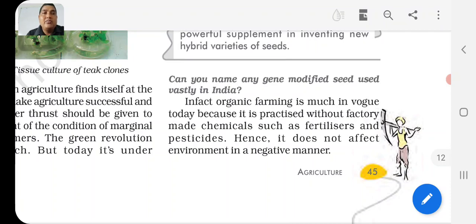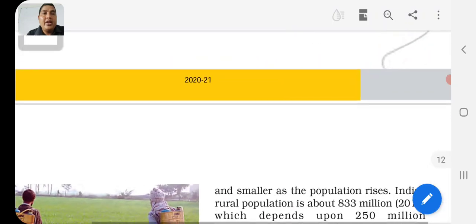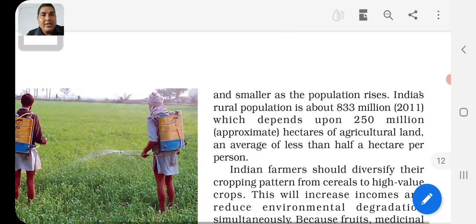Organic farming is much more relevant today because it is done without factory-made chemicals such as fertilizers and pesticides, and hence does not affect the environment in a negative manner.